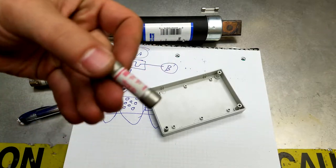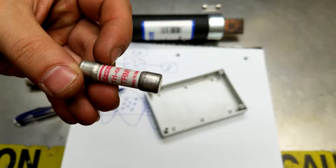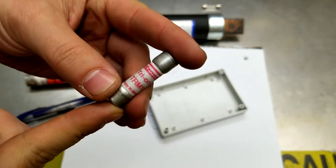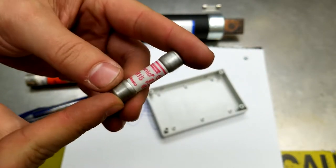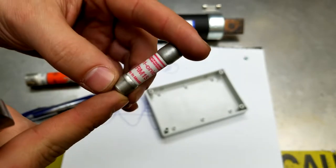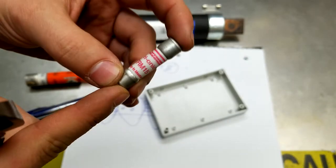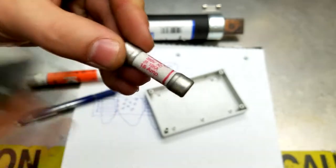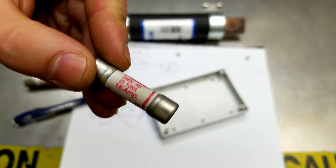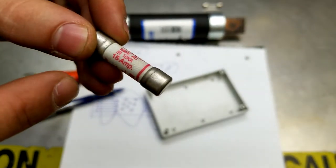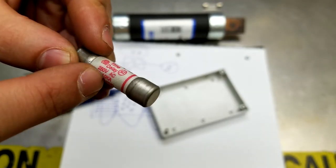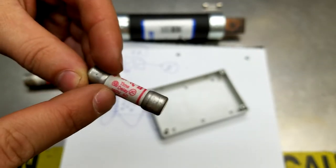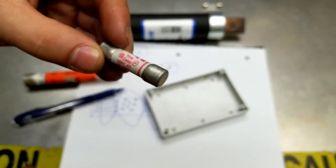So this particular fuse is a 15 amp fuse. Trion, Ferraz Shawmut, made in, no, assembled in Mexico. But it does sound German. Capability to stop 10 kiloamps. It's a 15 amp fuse, 250 volts rated, time delay. Okay, very important.